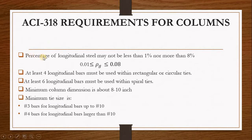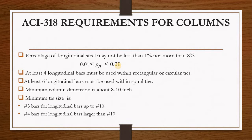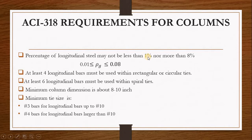The first ACI requirement is that the percentage of longitudinal steel may not be less than 1% nor more than 8%. So the reinforcement ratio must be from 0.01 to 0.08. This is basically how much steel we have in the column. If you want to design a column, at least 1% of that column needs to be steel, and you don't need to provide more than 8% steel.